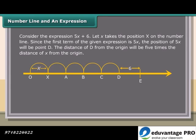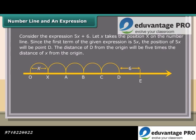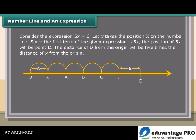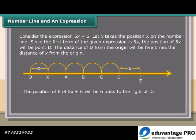Consider the expression 5x plus 6. Let x take the position x on the number line. Since the first term is 5x, the position of 5x will be point D. The distance of D from the origin will be 5 times the distance of x from the origin. Therefore, the position E of 5x plus 6 will be 6 units to the right of D.